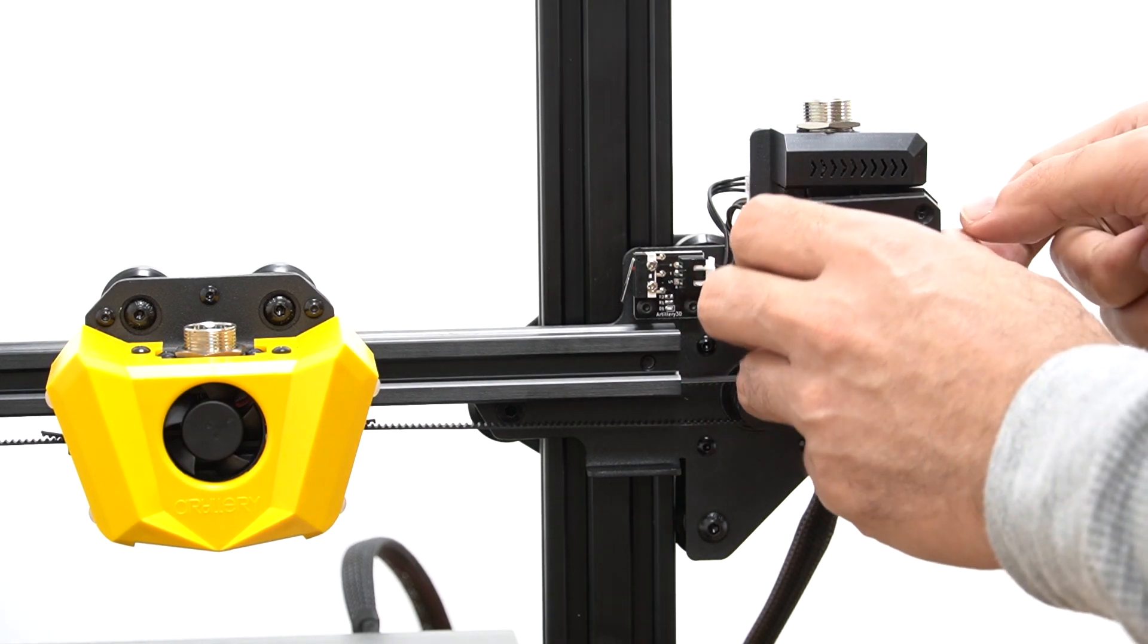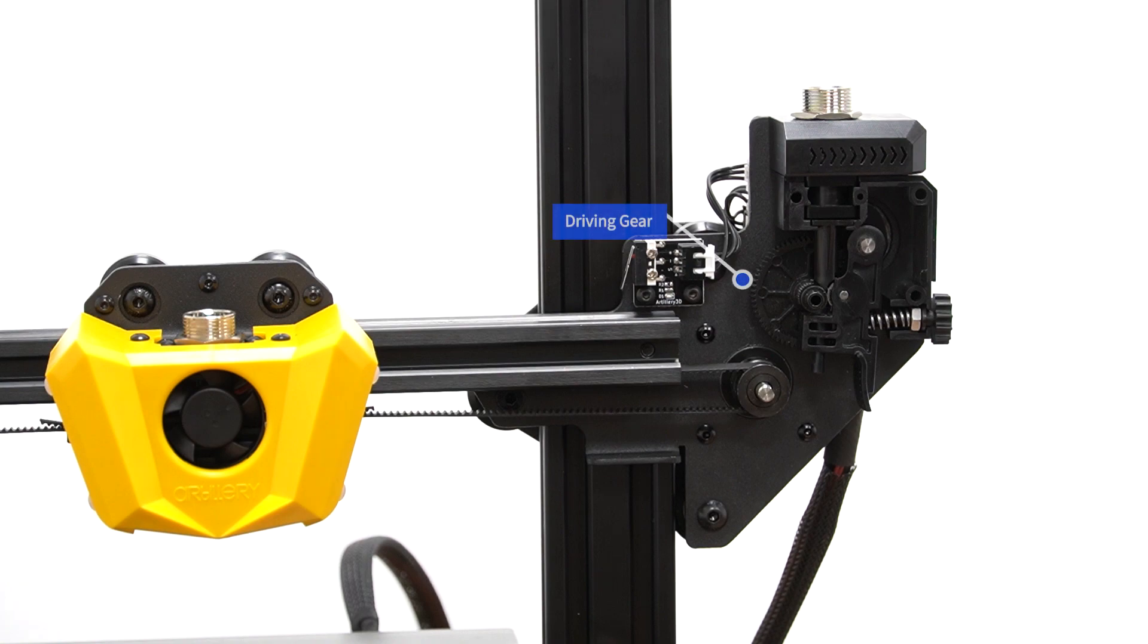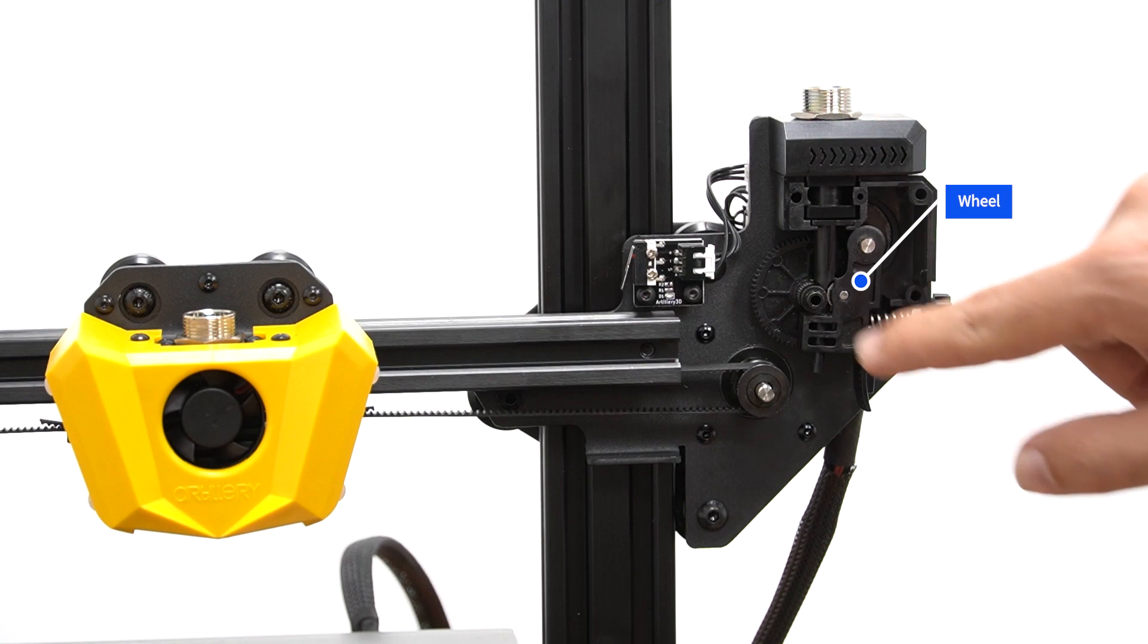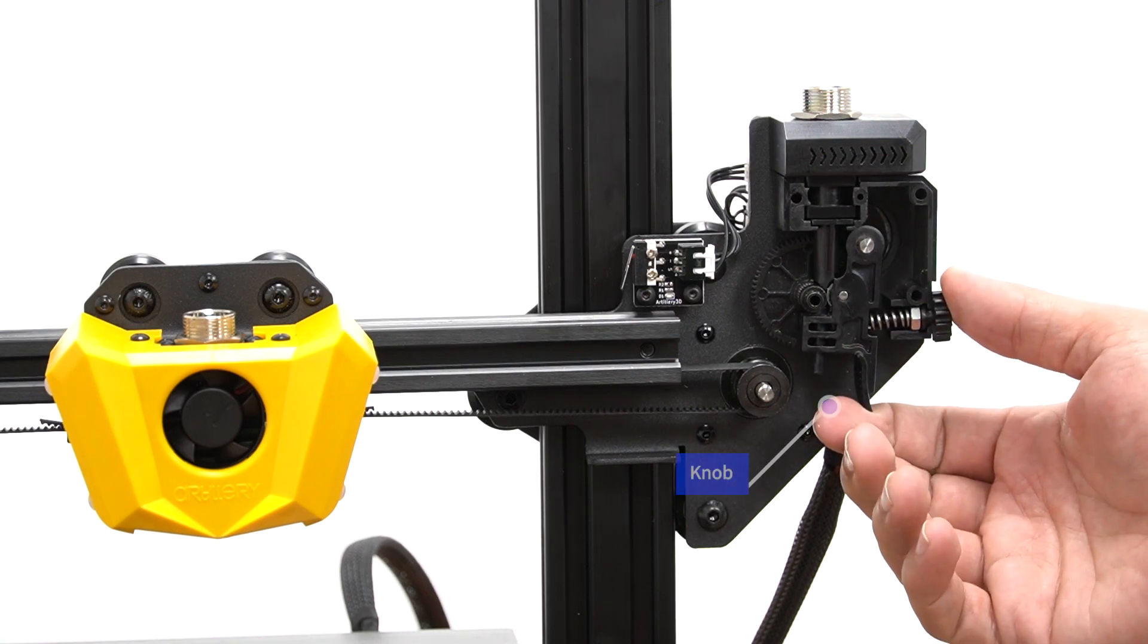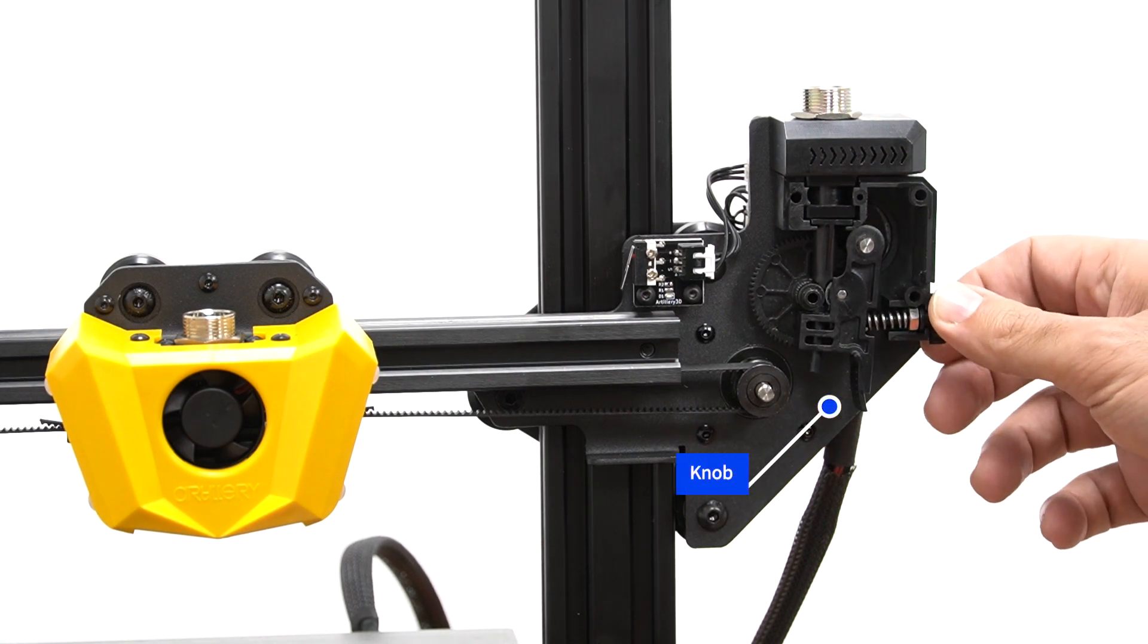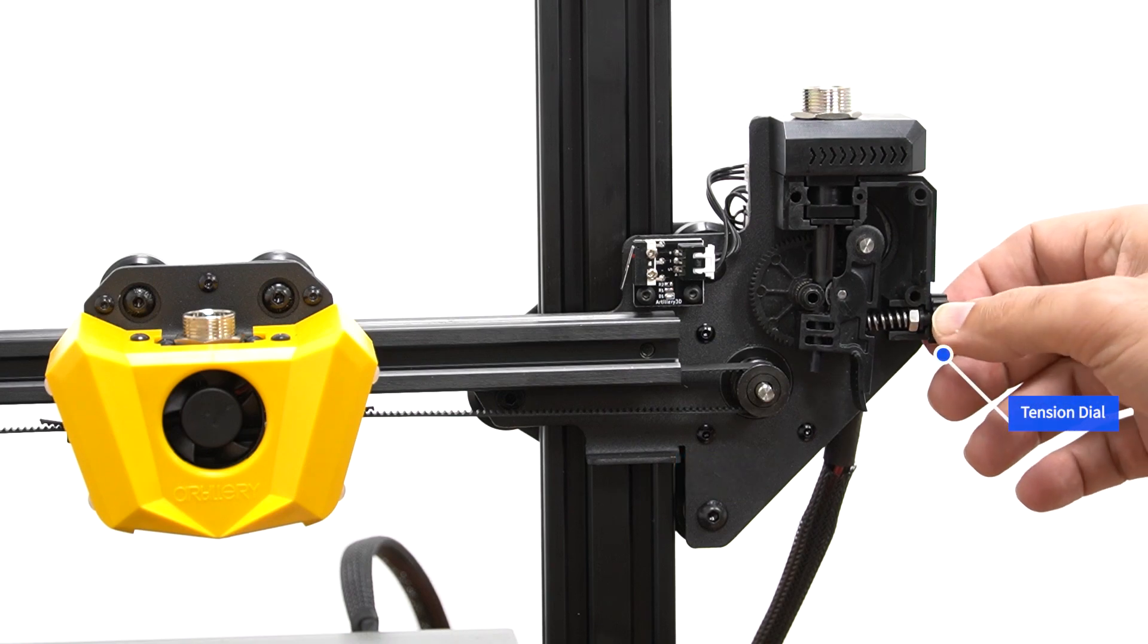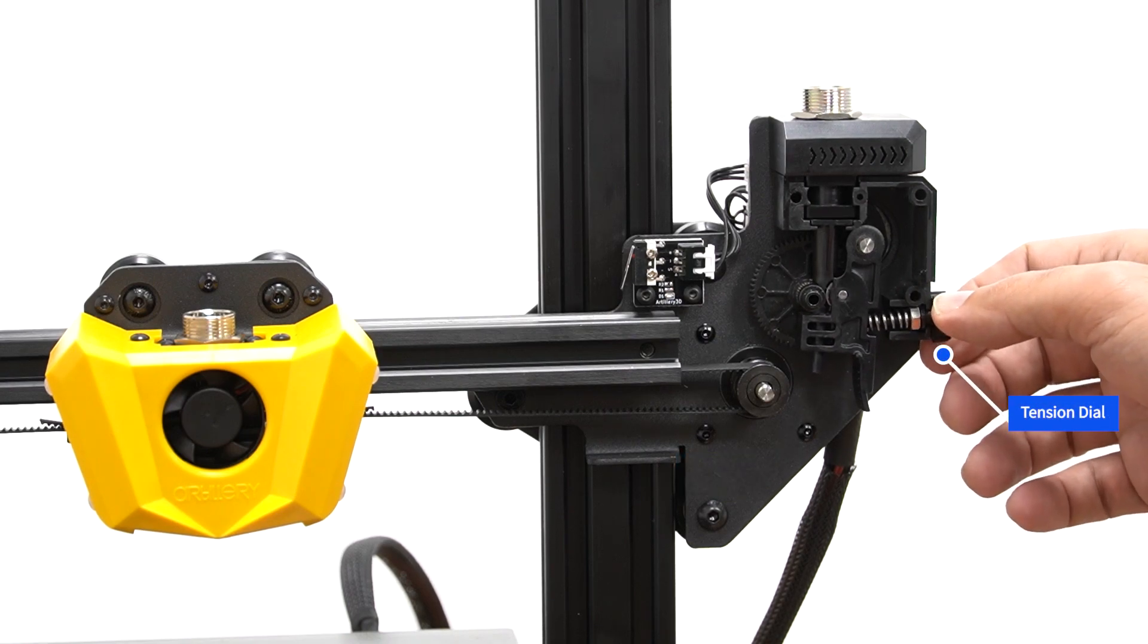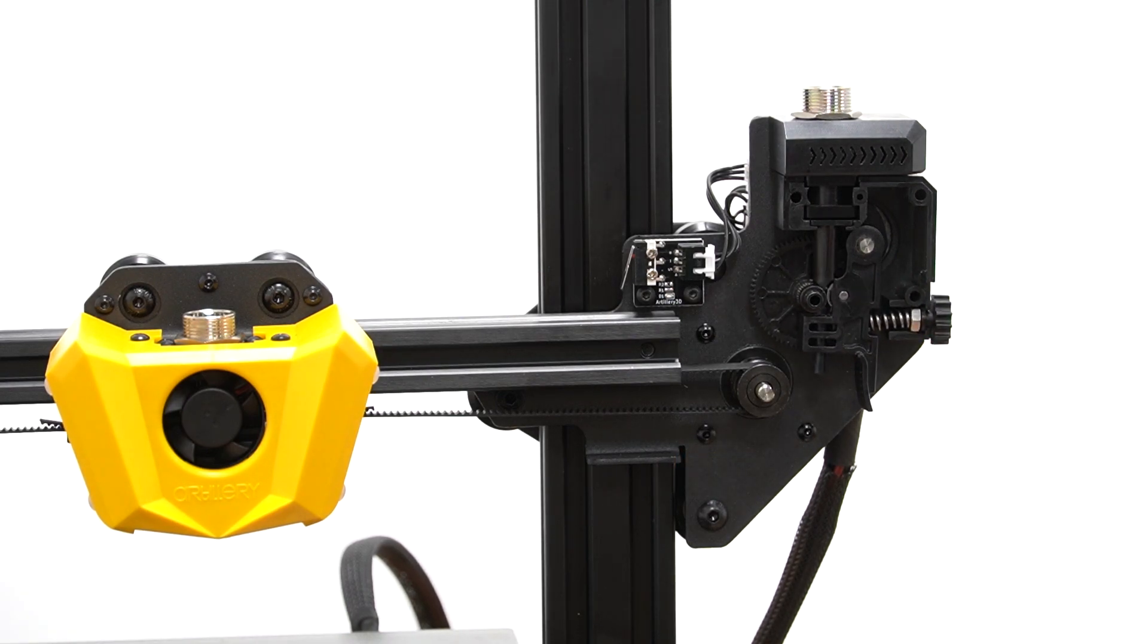So these are the components inside the extruder: the driving gear, the wheel, the knob, and this is where you can actually adjust the tension of the feeding filament.